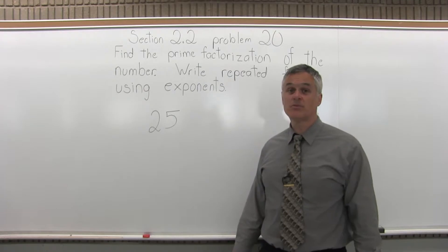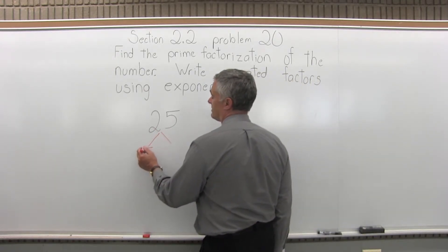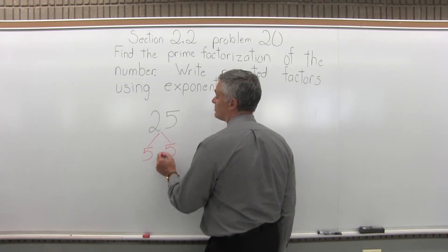So what primes multiply to make a 25? Split up 25 into the first thing you can see that multiplies to make a 25. So 5 times 5 is 25.